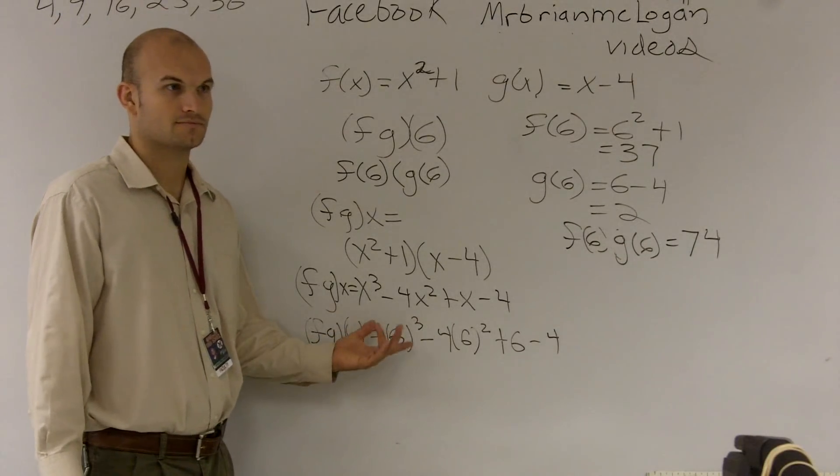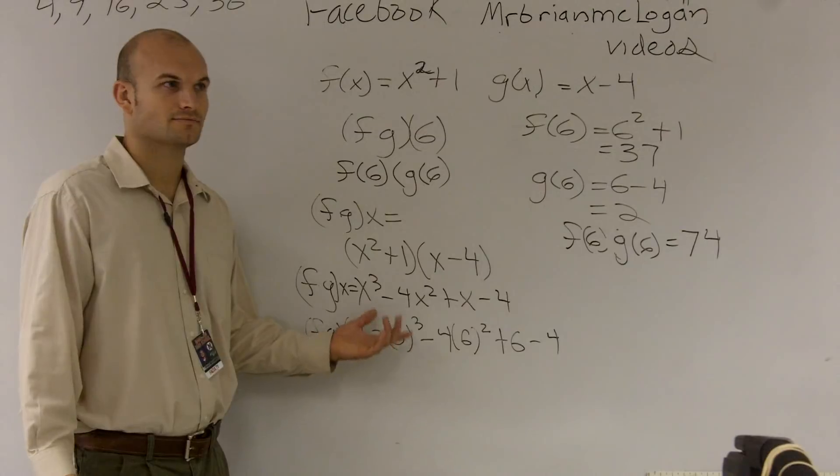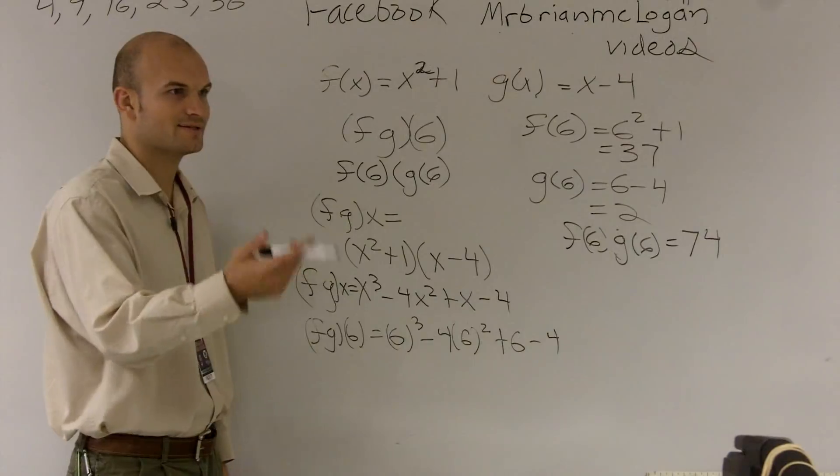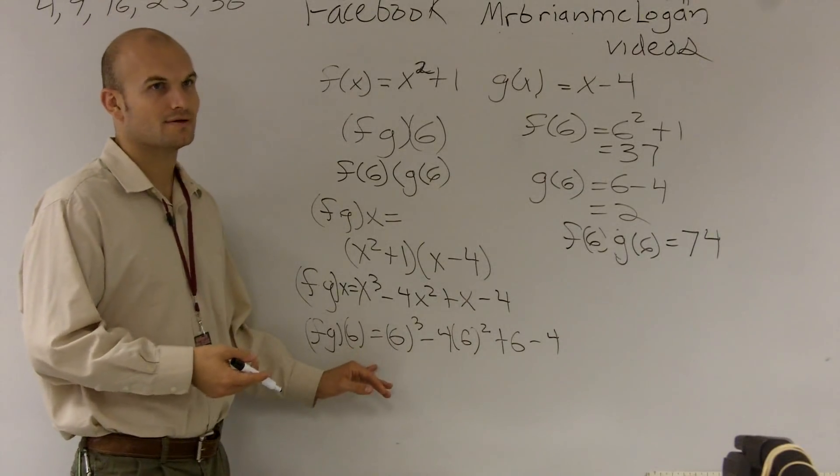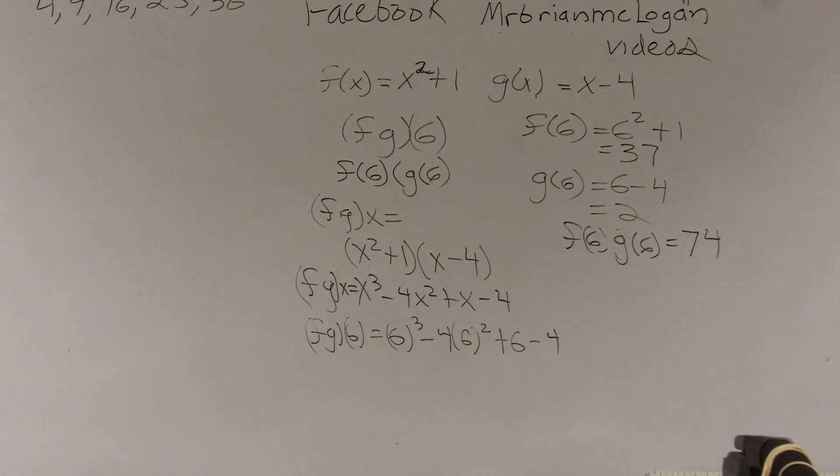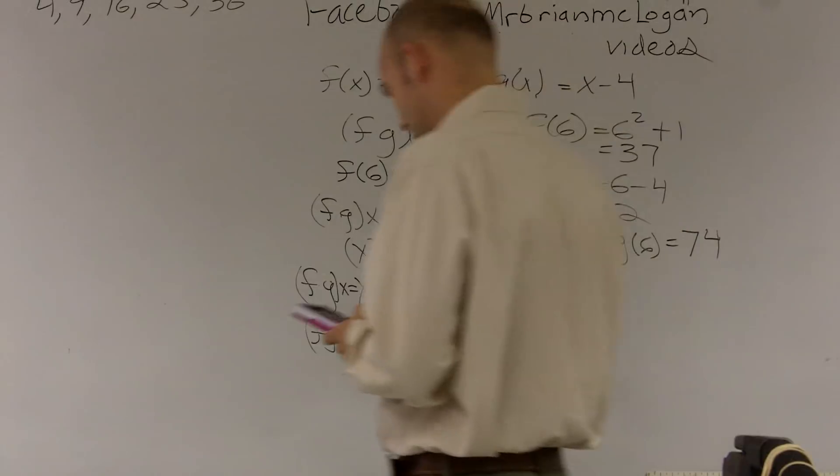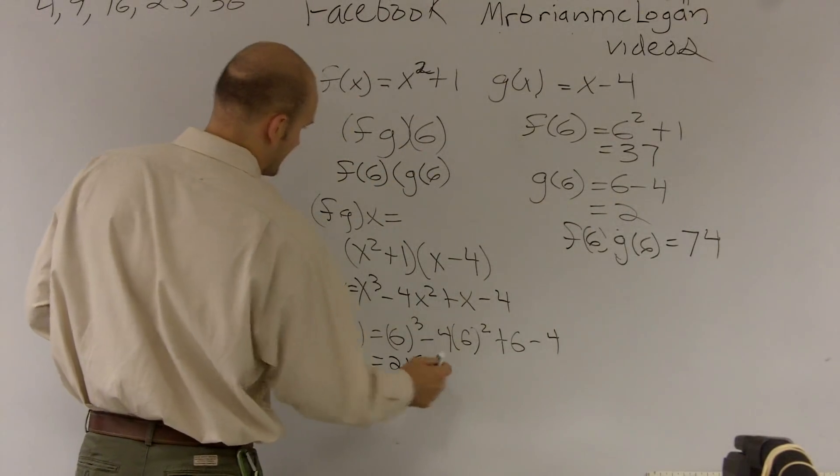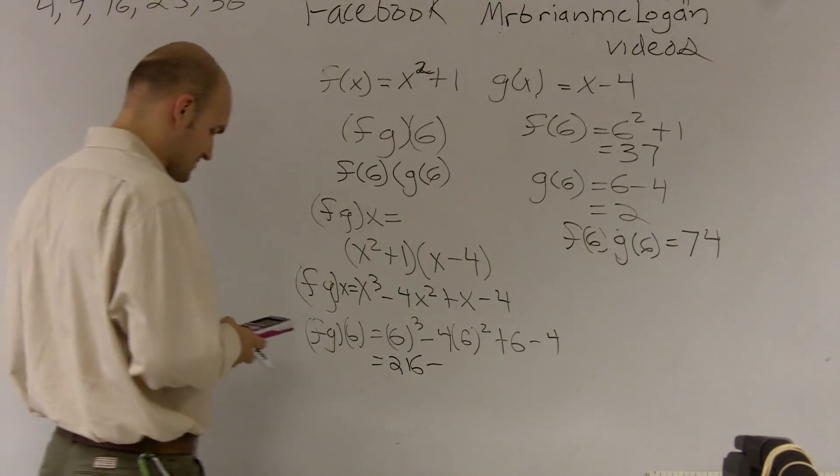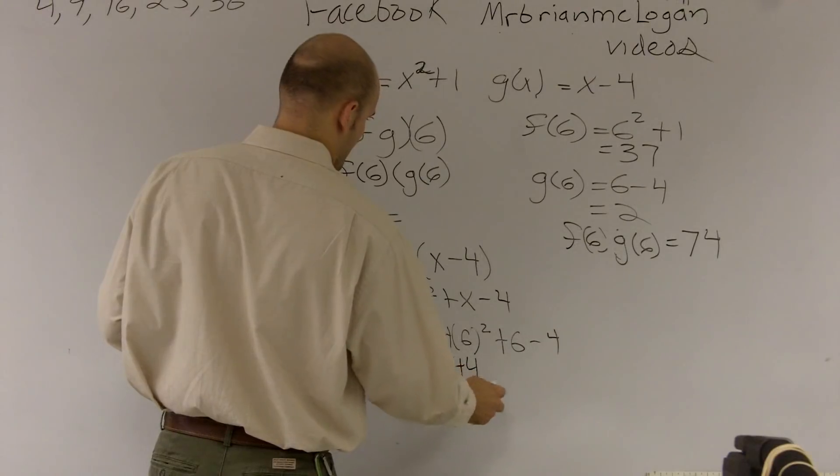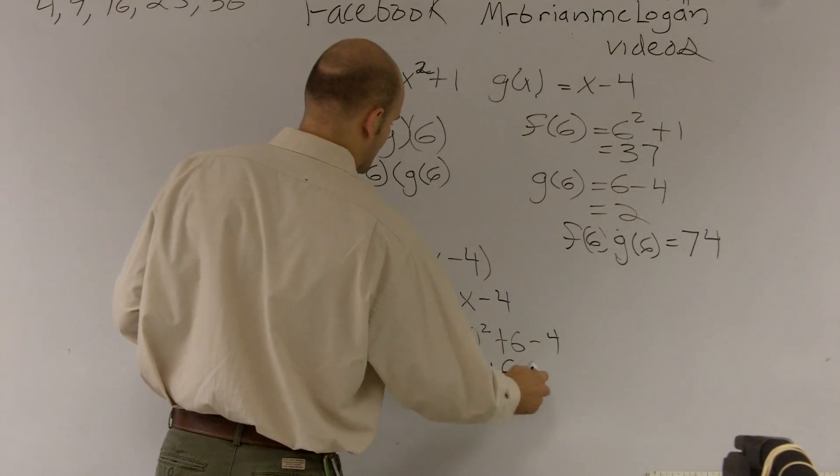6 cubed is? Oh, 6 cubed, 36 times. 216. Can we just go through the values so everybody can go through this? All right. I'll go ahead and take the workout here. 216 minus 6 squared is 36 times 4, 144, plus 6, minus 4.